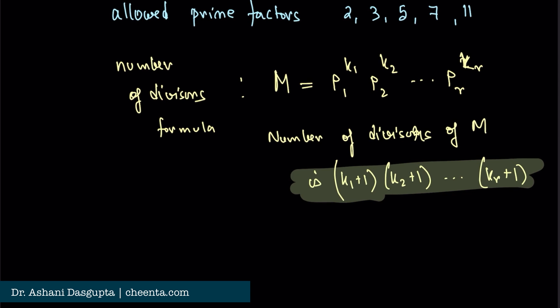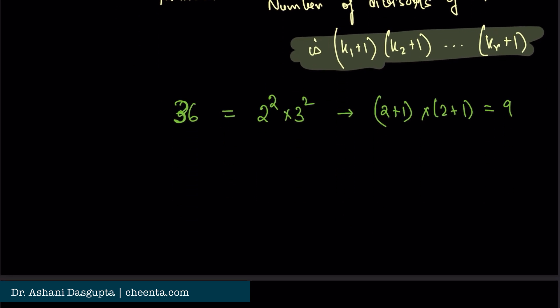Let me give you an example. Let's say 36. You first prime factorize it: 2² × 3². The number of divisors of 36 will be (2+1) × (2+1), which is 9. And you can check that there are exactly 9 divisors of 36: 1, 2, 3, 4, 6, 9, 12, 18, and 36. There are exactly 9 factors and we get this from the divisor formula.